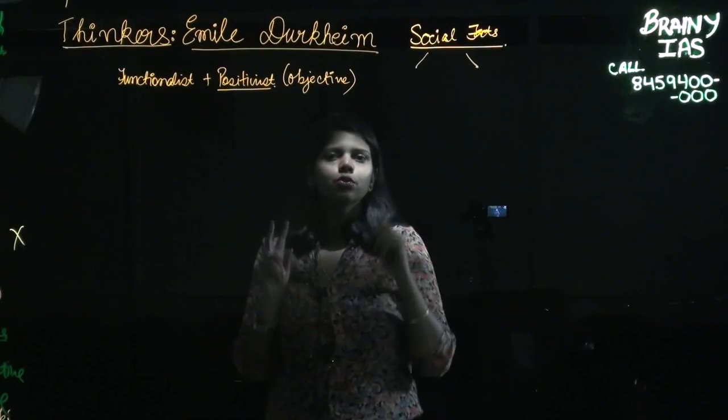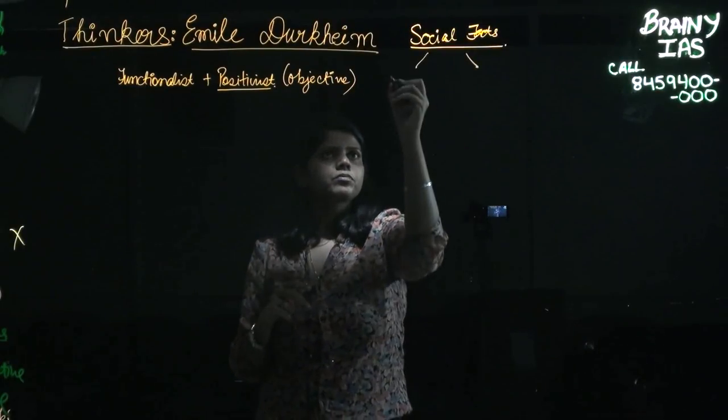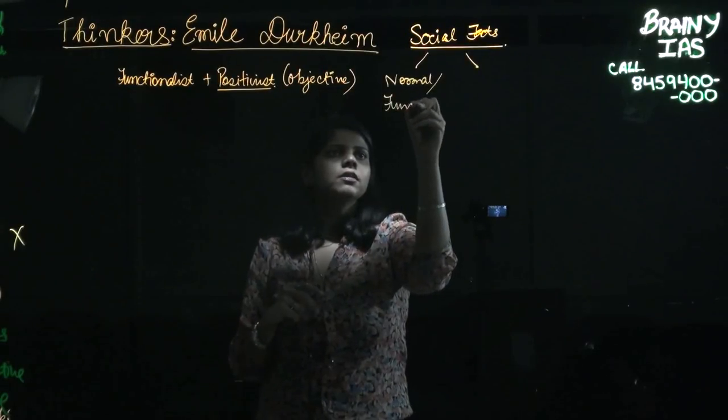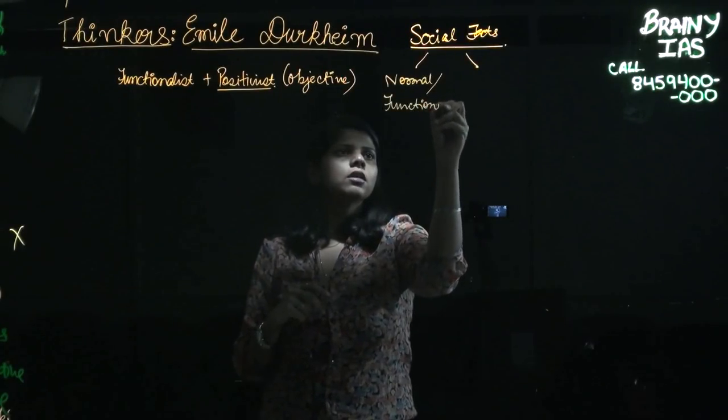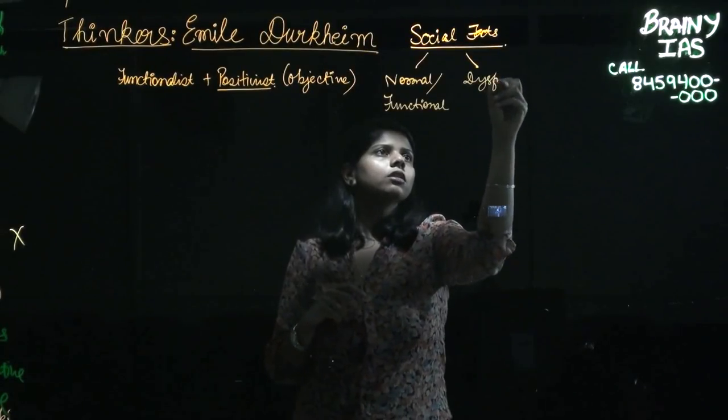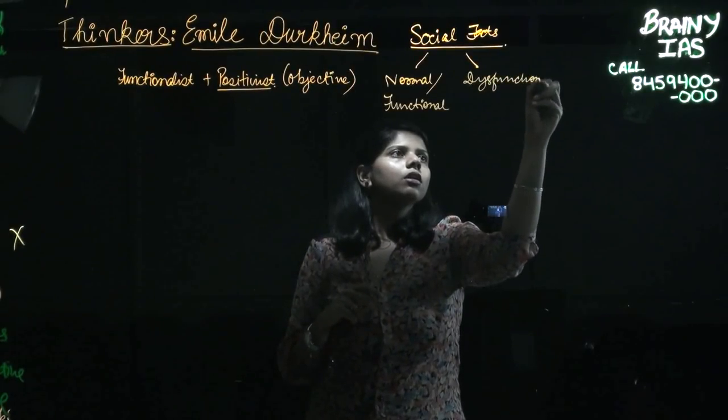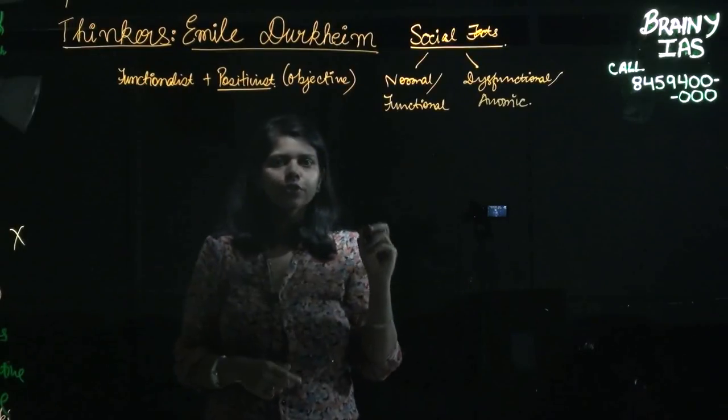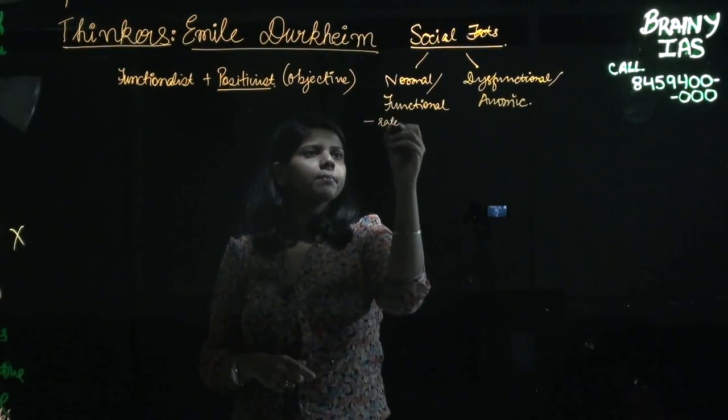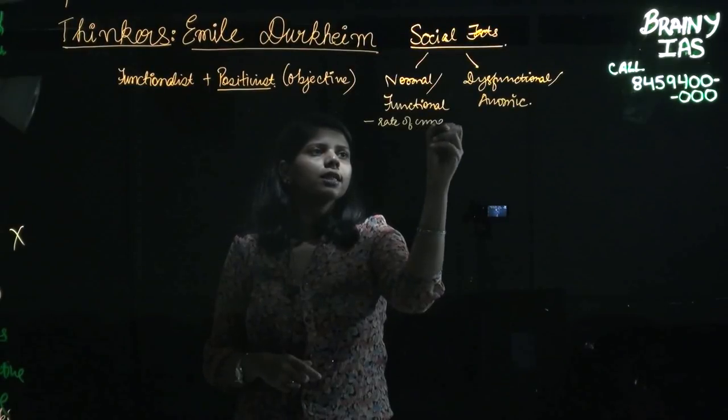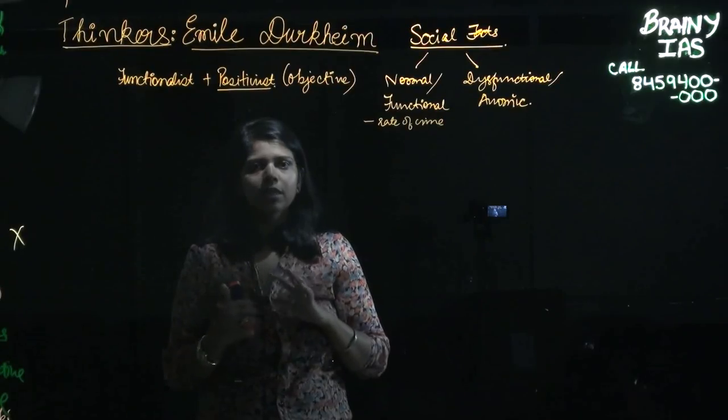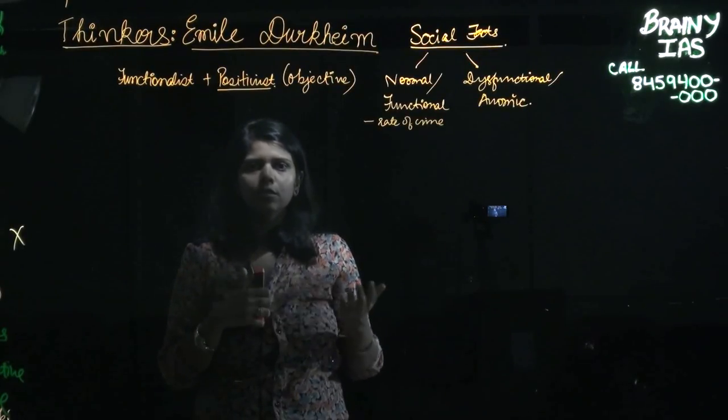Social facts basically are those facts which happen to have a bearing in society. According to him, there are basically two types of social facts: normal or functional, and dysfunctional or anomic. Rate of crime is a functional fact because it tells the society that there is something wrong with it and it needs to rectify its measures.